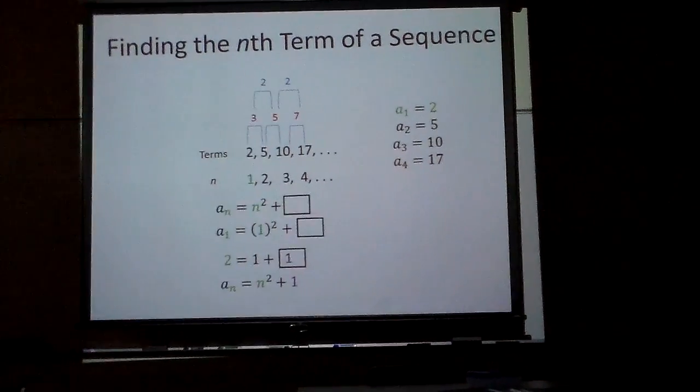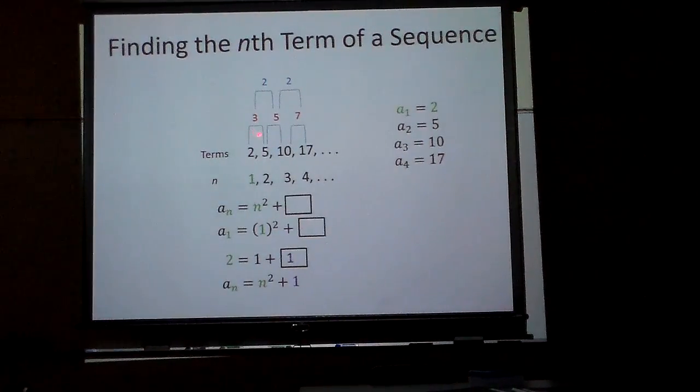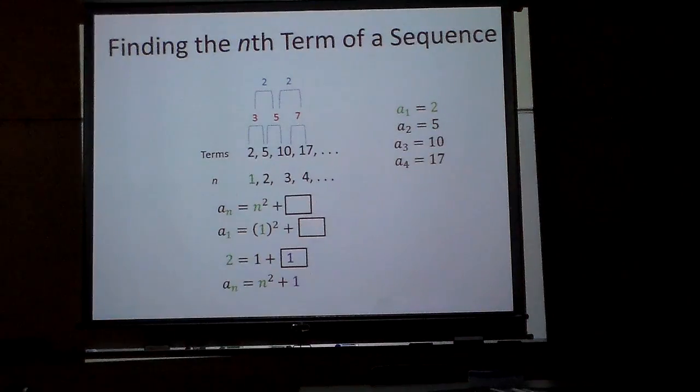And the thing about n squareds that you might want to make note of, if it's increasing by increasing by two, the number increasing by keeps increasing by two, it's probably a squared somewhere in your problem that is making it happen.